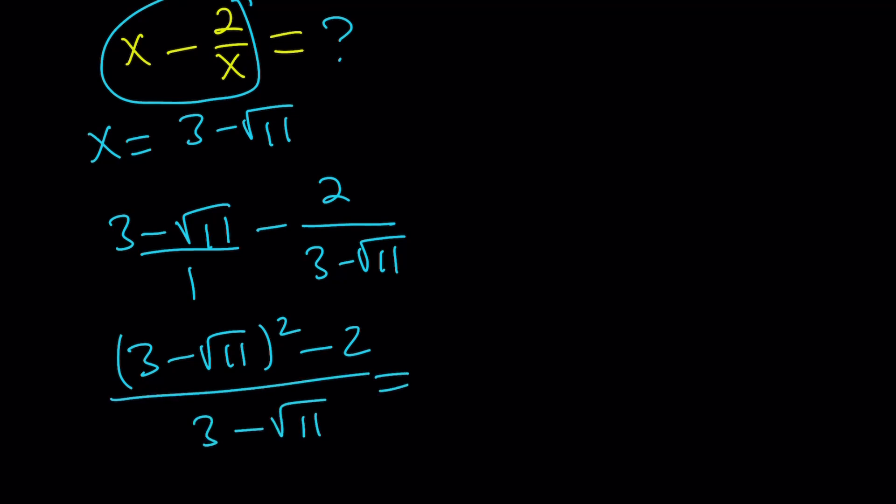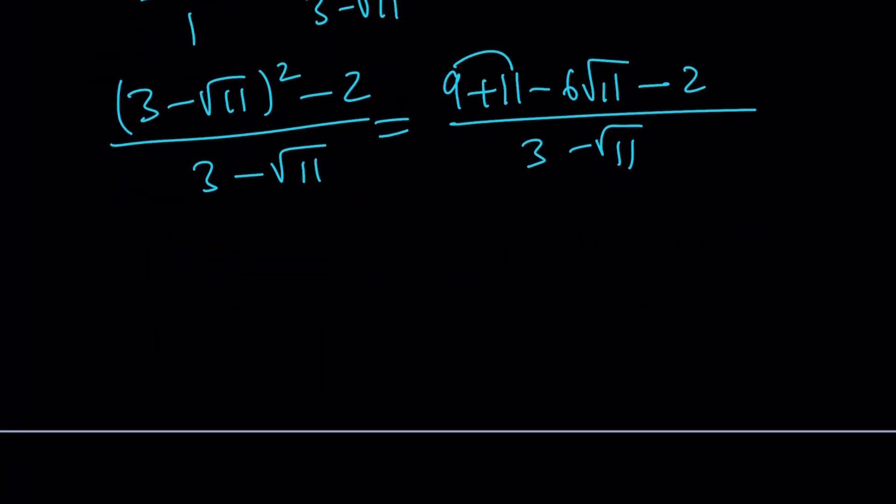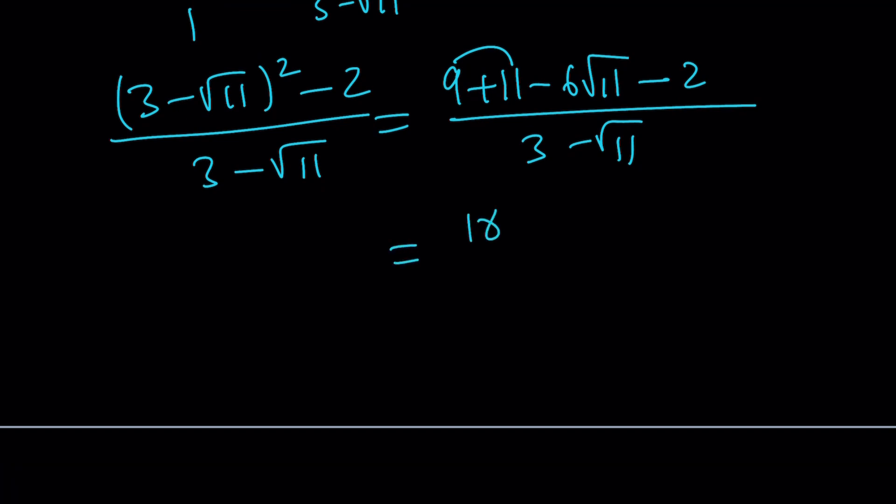If you expand it, you're going to get 9 plus 11 minus 6 root 11 minus 2 divided by 3 minus root 11. 9 plus 11 is 20, minus 2 is 18 again. This is 18 minus 6 root 11 divided by 3 minus root 11.